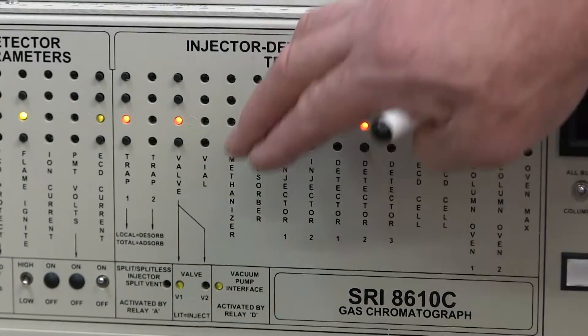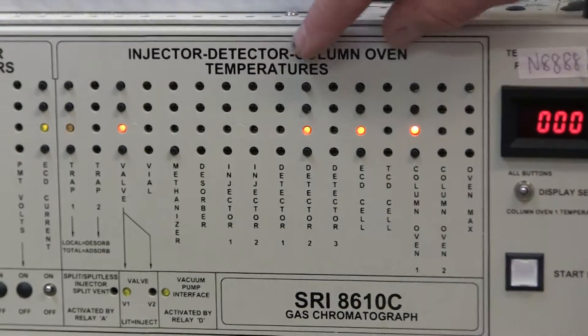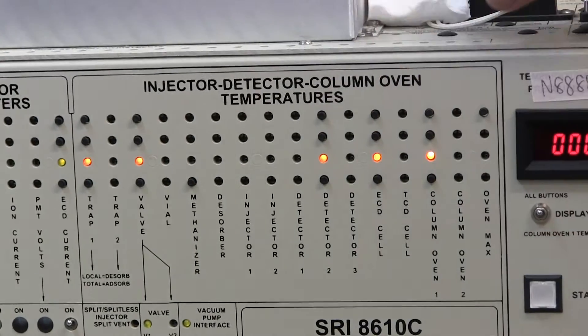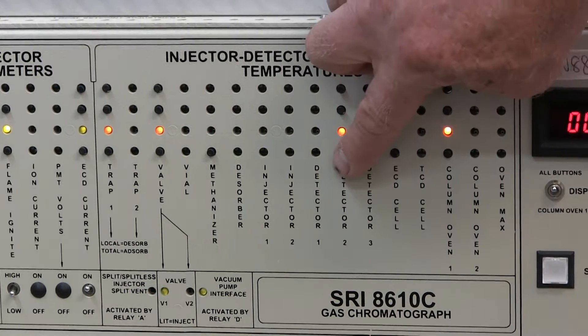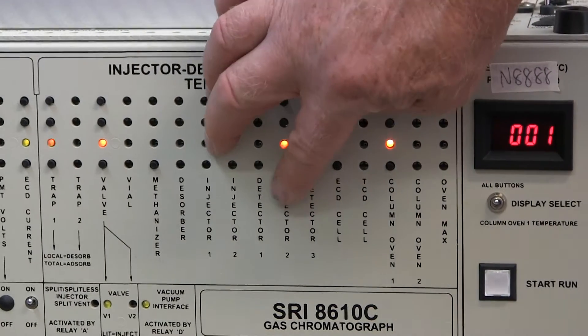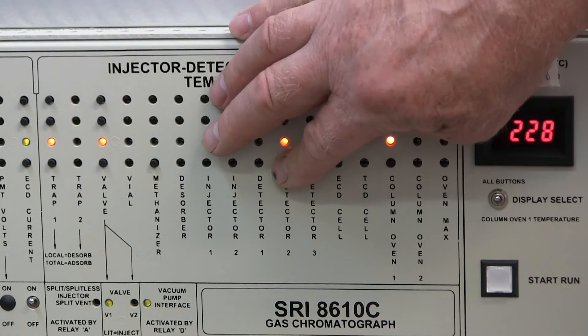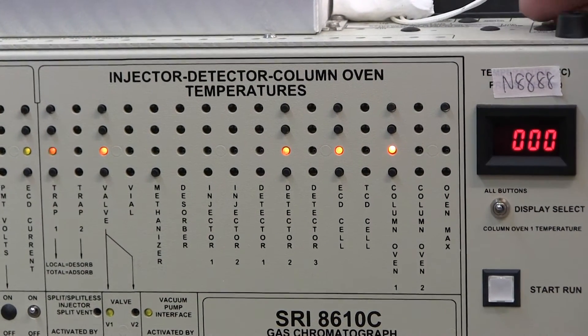This GC has a detector temperature associated with the FID detector in position two. The set point temperature is 300, the actual temperature is 229. So it's not quite at the set point temperature yet, but it will be as soon as it heats up.